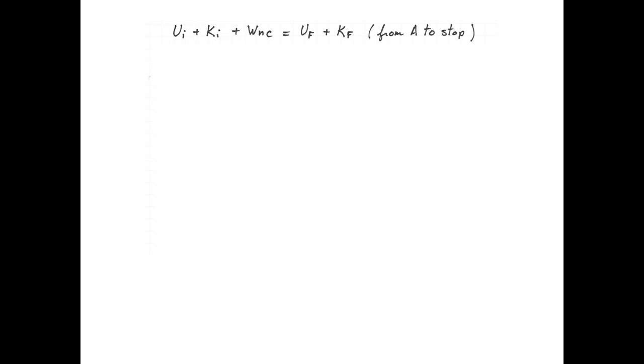This time we're going to apply conservation of energy from point A to the point where q2 would eventually stop and turn around. The initial potential energy is the potential energy of the pair q1, q2 when they are a distance A apart.